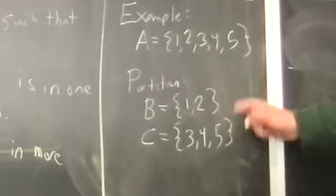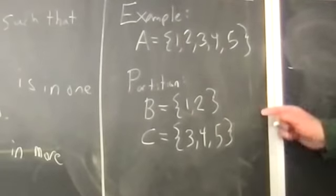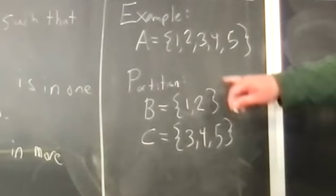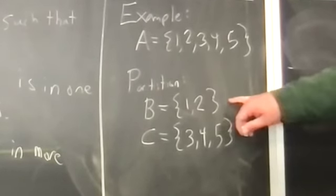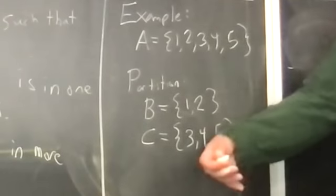Every element of a is in one of these two. First of all, these are both subsets of a. Second of all, every element is within one of these two sets, and third of all, there's no overlap between the sets.